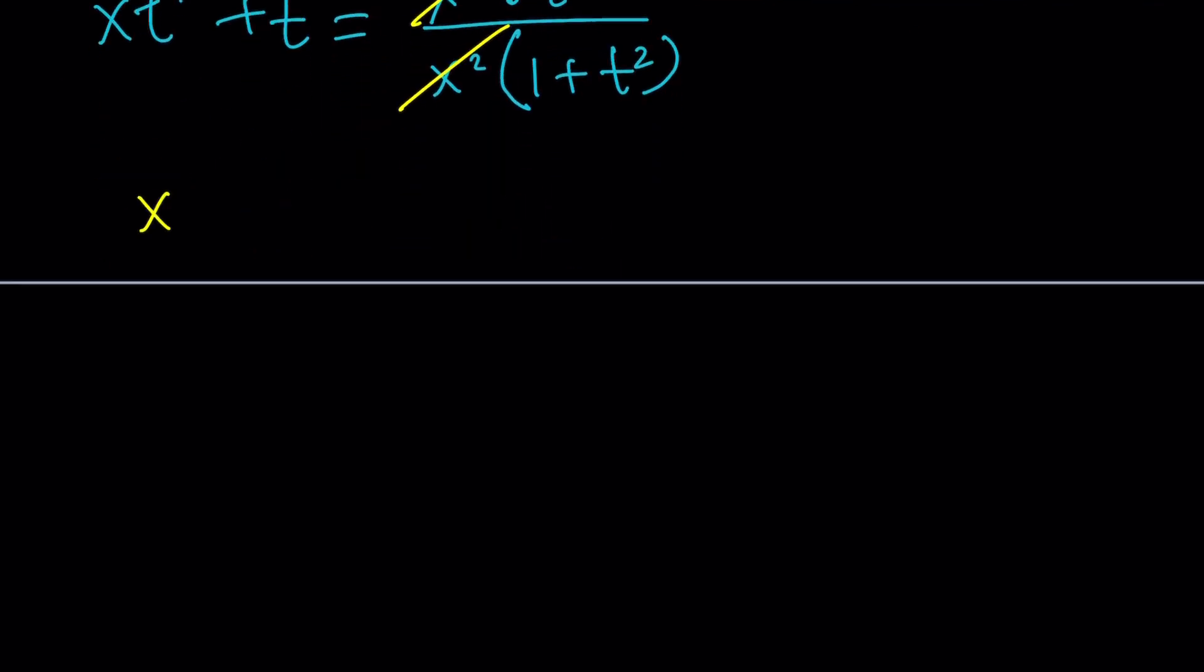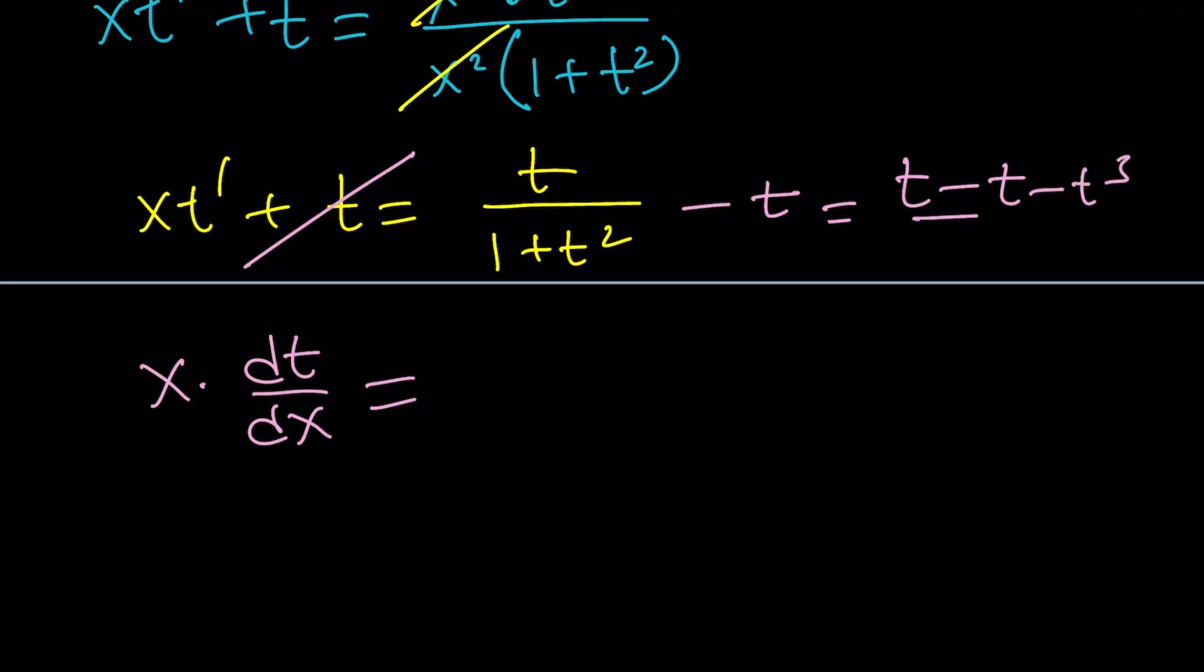Now we've got the following. xt' + t = t/(1 + t²). Of course, I'm supposed to subtract t from both sides so I can get rid of this. And write the t' as dt/dx. That's going to be equal to t - t - t³ divided by 1 + t². t cancels out. We end up with -t³/(1 + t²).